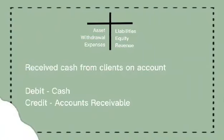Receive cash from clients on account. In this transaction, John Smith received cash from clients on account. That's why cash is in the debit side — it means napapasok ito kay John Smith. And accounts receivable naman is in the credit side.